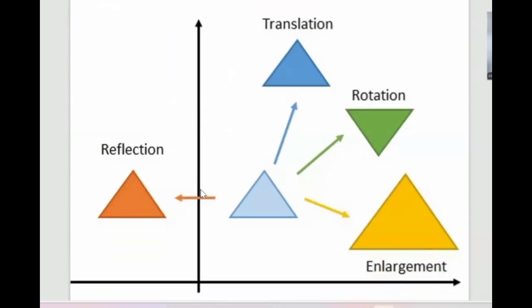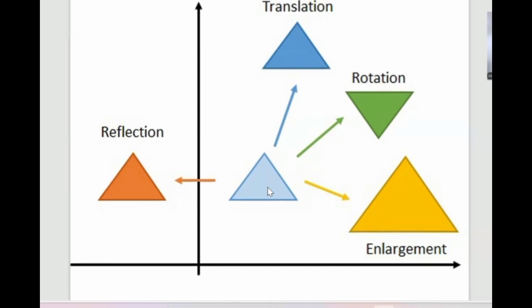Look at this example. This is a reflection — also for this triangle, it's like a mirror. While this is a rotation — you rotate this triangle. And this one is enlargement — the triangle gets bigger. And this is a translation.